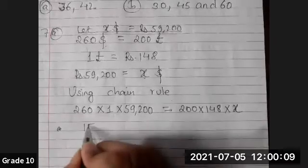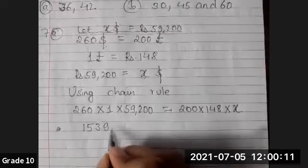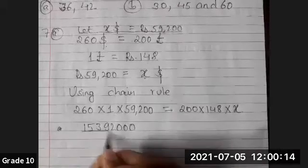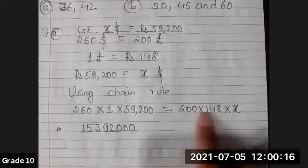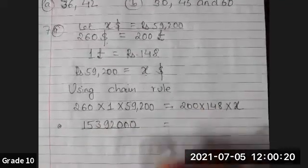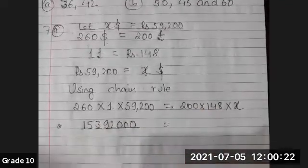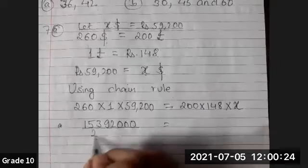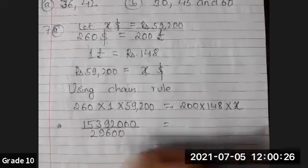15,392,000. And in the down part, the product of 200 and 148. I'll directly multiply here: 200 times 148 equals 29,600.